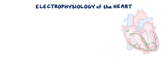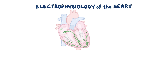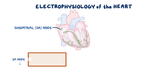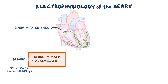The electrical impulses begin in the sinoatrial, or SA, node, which is located at the junction of the superior vena cava and right atrium. The SA node is considered the pacemaker of the heart and spontaneously and rhythmically produces impulses at 60 to 100 beats per minute. The impulse then moves quickly through the atrial muscle, causing depolarization. When the atrial muscle cells depolarize, they contract, pushing blood from the atria into the ventricles.